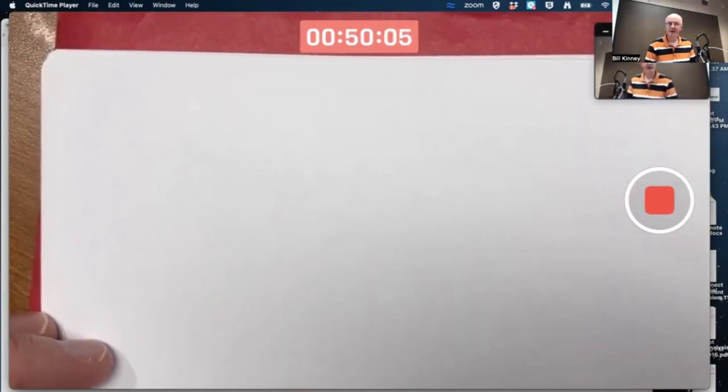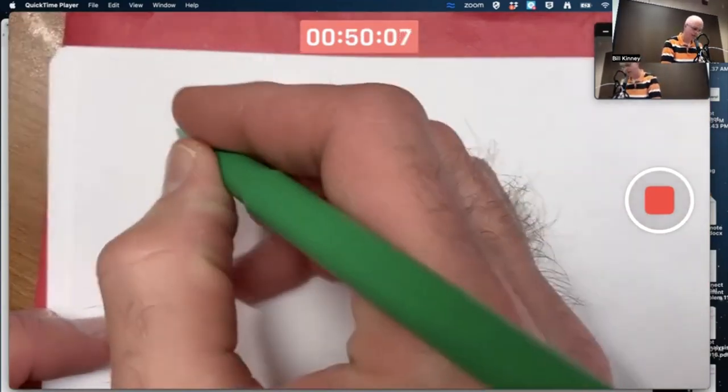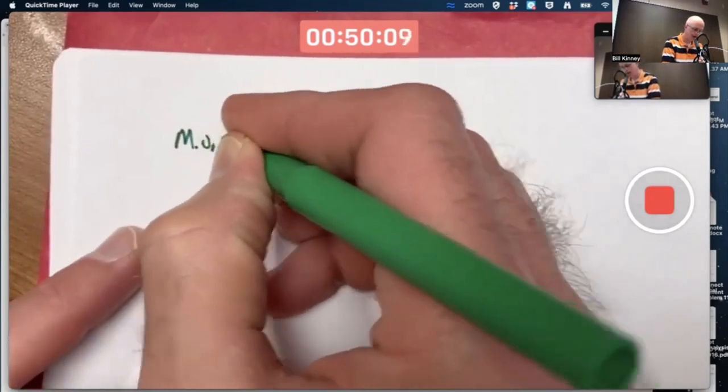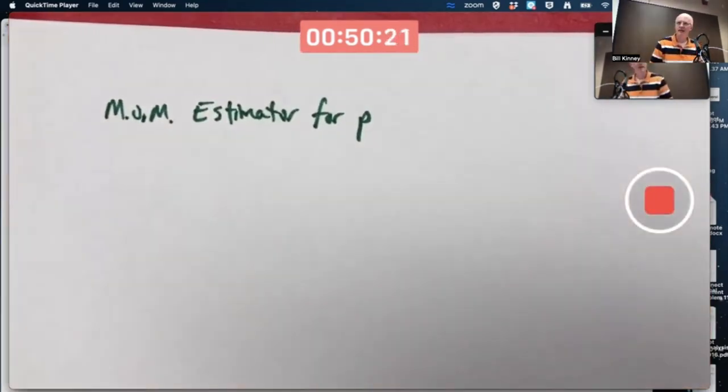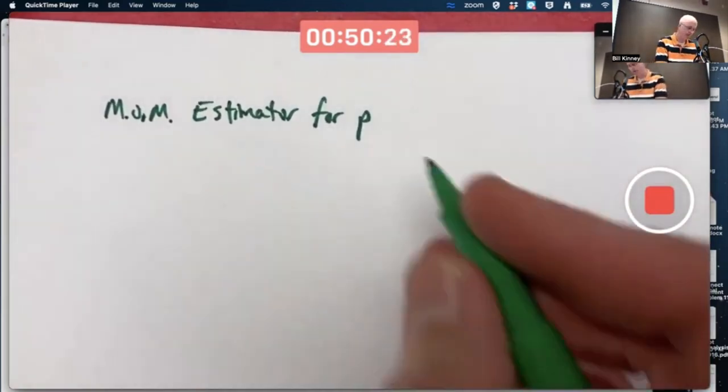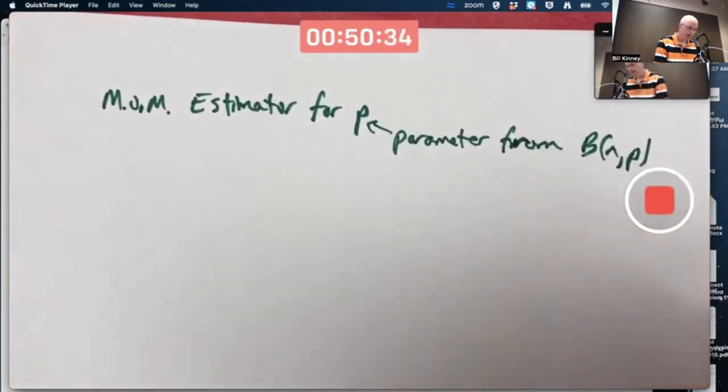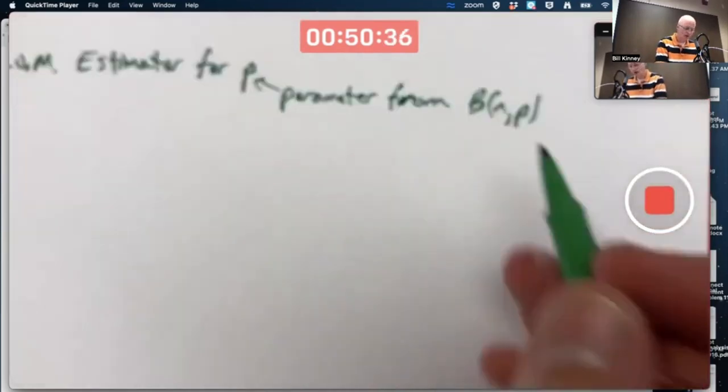Here's another example of a method of moments estimator. A MOM estimator for P, one of the parameters in a binomial distribution. I'll write it this way. Parameter from BNP, binomial distribution.